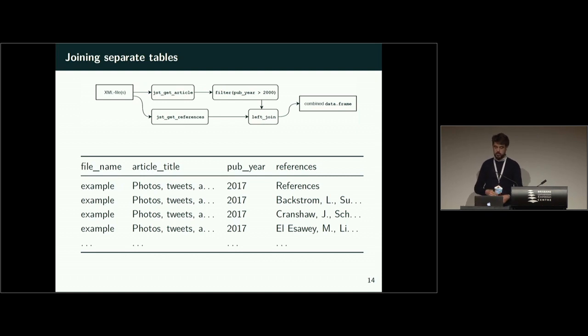So you get your XML files, get the main content of the article, filter based on that, and then simply left join or right join, depending on how you set it up, to get a combined data frame, which we can see down here, where we then have file name, article, and publication year repeated for each reference.